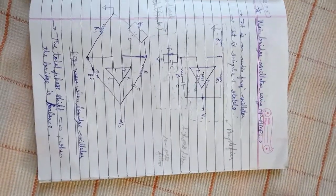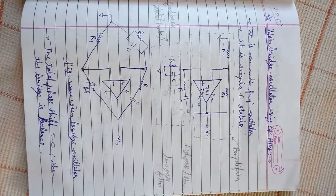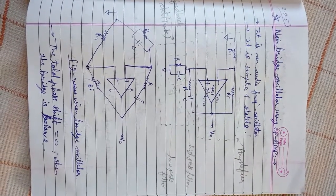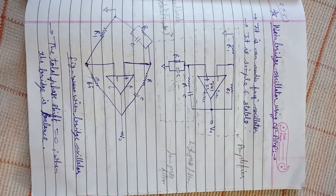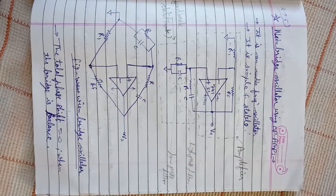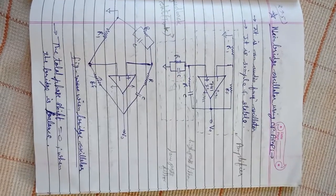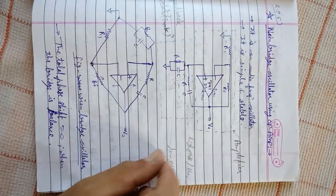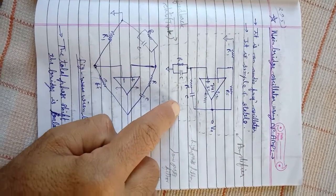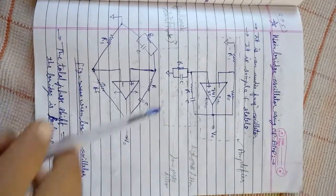Wien bridge oscillator — जैसा इसका नाम है, इसमें एक bridge होता है जो op-amp के around लगा होता है। अगर bridge balance है तो जो frequency होगी वो resonant frequency होगी, और resonant frequency पर proper sustain oscillations होंगे क्योंकि Barkhausen criteria fulfill होगा। यह एक audio frequency oscillator होता है जो simple और stable होता है।